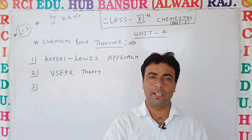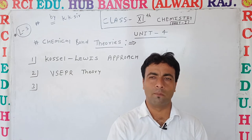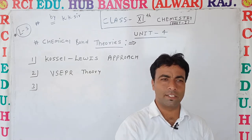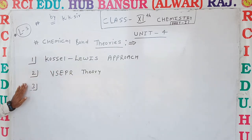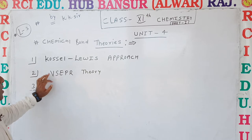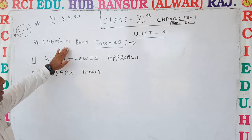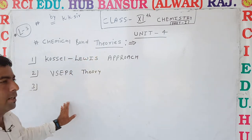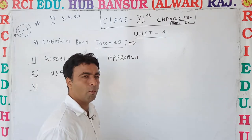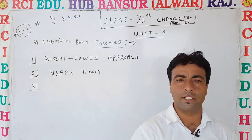Welcome to RCI Education Hub Bansur Online Classes. Today we continue unit number 4, Chemical Bond, and today we start chemical bond theories. In the previous class you already saw the types of bonds — it may be sigma, pi, and other types.